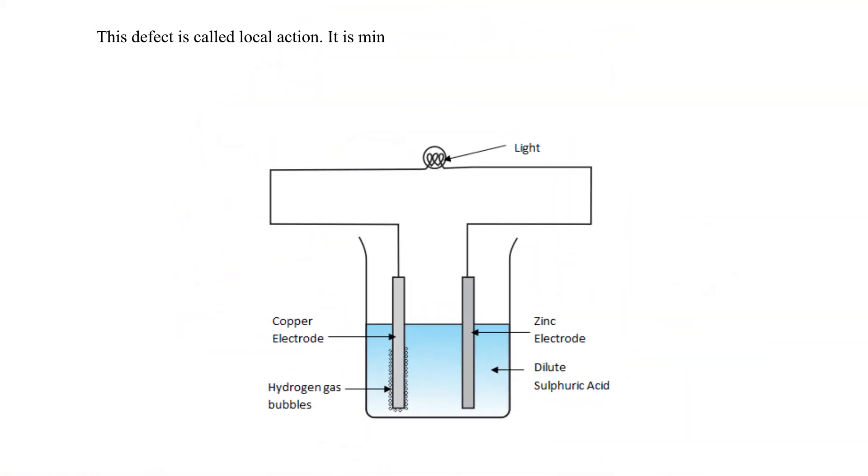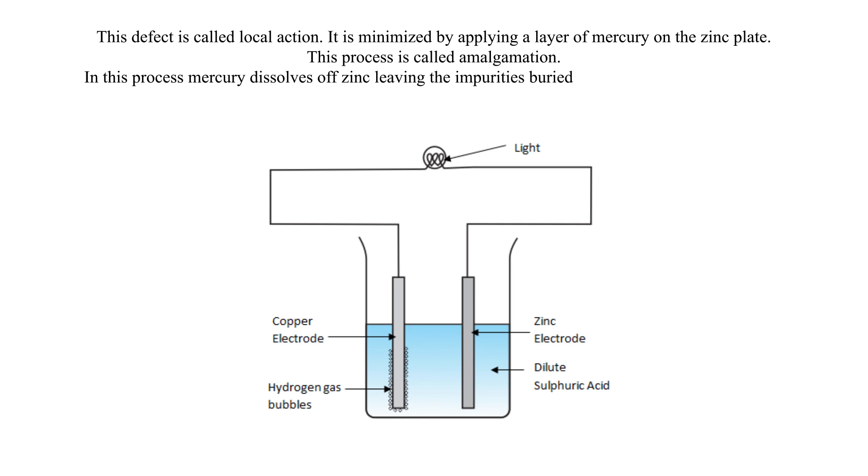This defect is called local action. It is minimized by applying a layer of mercury on the zinc plate. This process is called amalgamation. In this process, mercury dissolves off zinc leaving the impurities buried in the electrode. It can also be minimized by use of pure zinc.